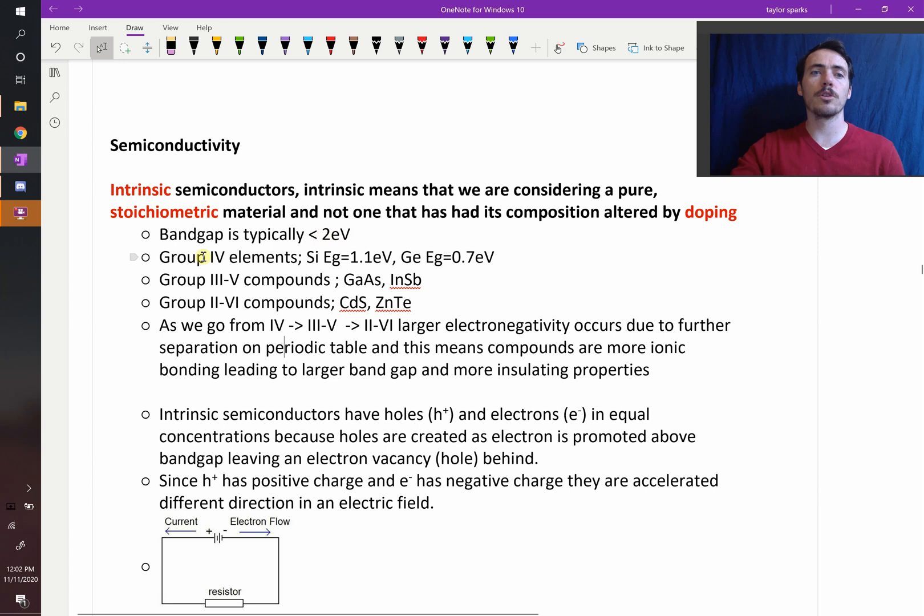Some examples: group four elements like silicon or germanium, these have band gaps of 1.1 and 0.7 electron volts respectively. But you could also end up with mixtures of groups three together with group five. Things like gallium and arsenic or indium and antimony.